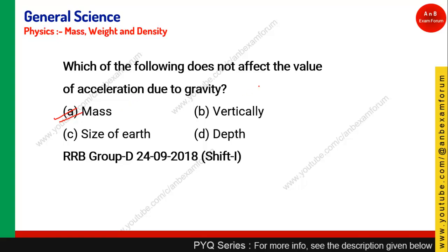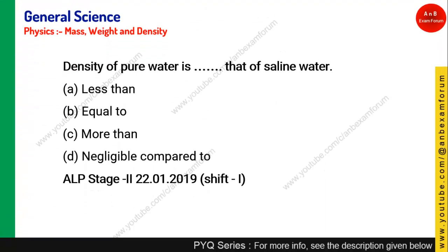From our formula W = mg, weight is dependent on both mass and acceleration due to gravity. The value of g changes from one place to another, so weight can also change from place to place, but mass remains constant.